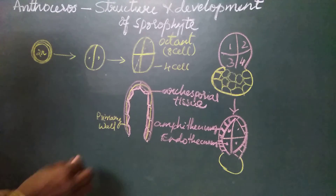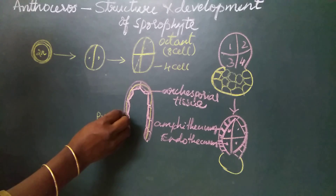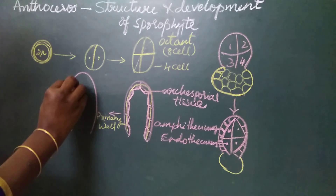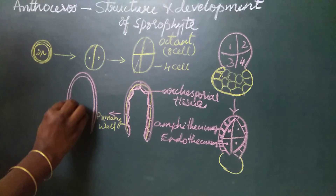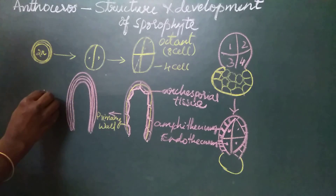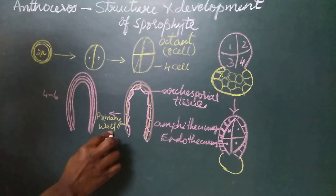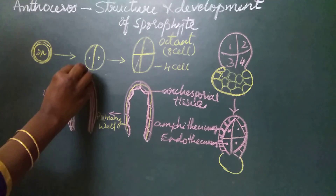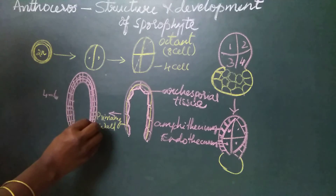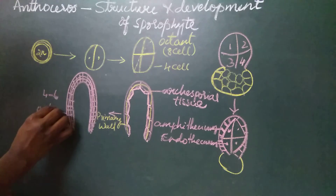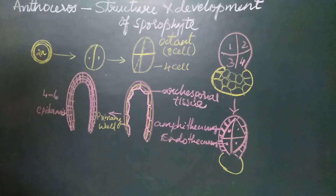Further division occurs in the primary wall layers. As the capsule is growing and developing, the primary wall layers divide periclinally a number of times, resulting in the formation of four to six wall layers. The outermost layer is identified as the epidermis, which has highly cutinized cells, and the innermost is the archesporial tissue.